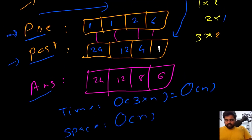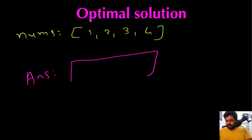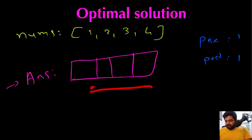For the optimal solution, rather than maintaining two separate prefix and postfix arrays, we create a single answer array and perform both passes inside it. We use two variables — prefix and postfix — each initialized to 1. First, we iterate left to right, storing prefix products into the answer array and updating the prefix variable. Then we iterate right to left, updating postfix values inside the same answer array. By the time we finish, the answer array is completely filled.